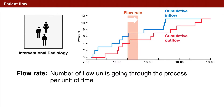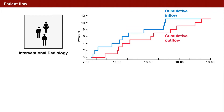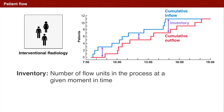There are a couple more things this graph teaches us about patient flow. We can also compute the number of patients that are in the department at any given moment of time. This is simply the difference between the inflow curve and the outflow curve. The number fluctuates between 0 in the morning and 4 around 3 p.m. We call this number the inventory.